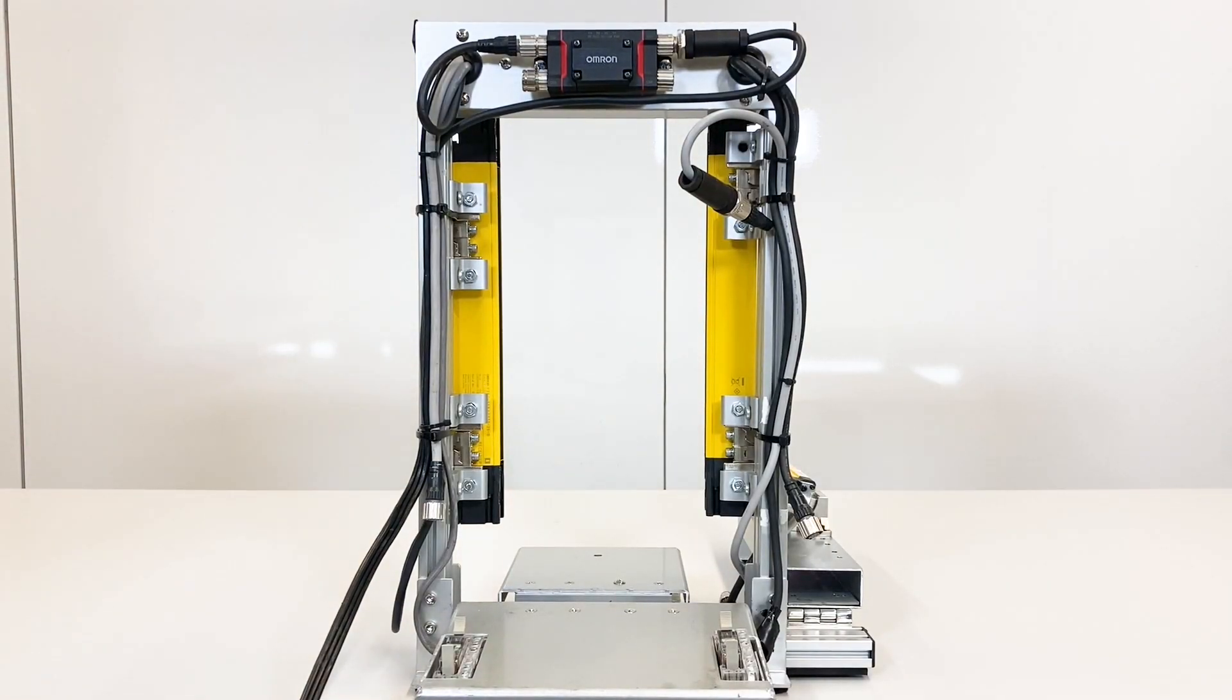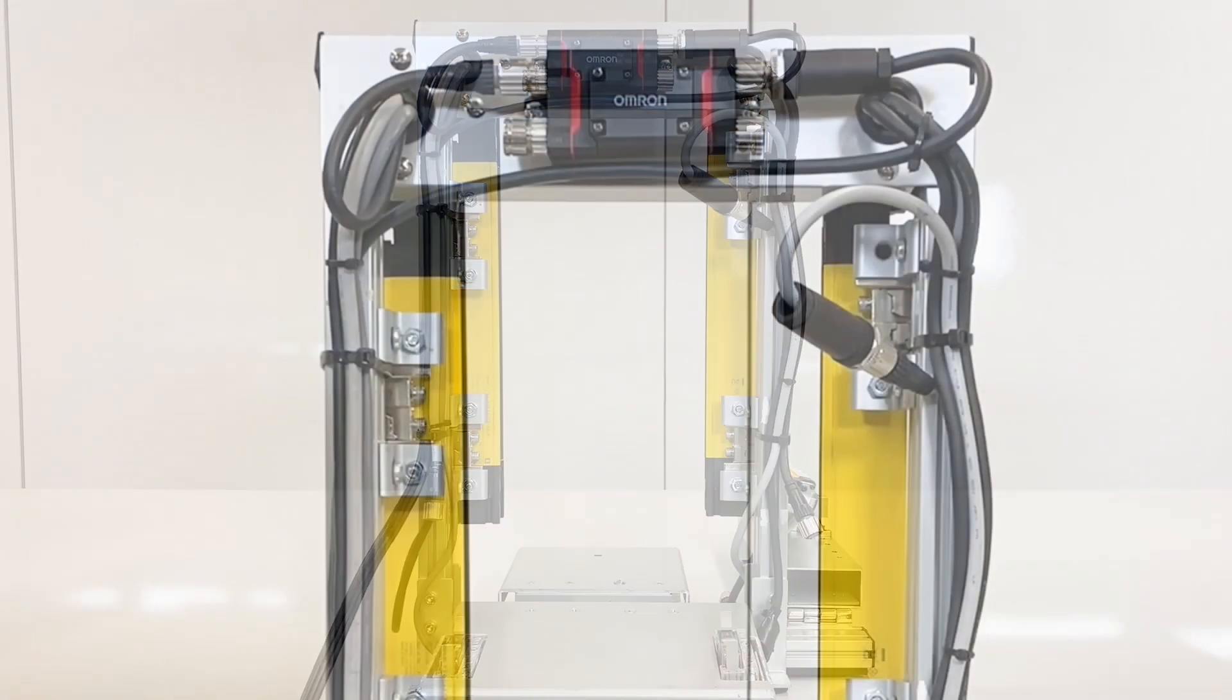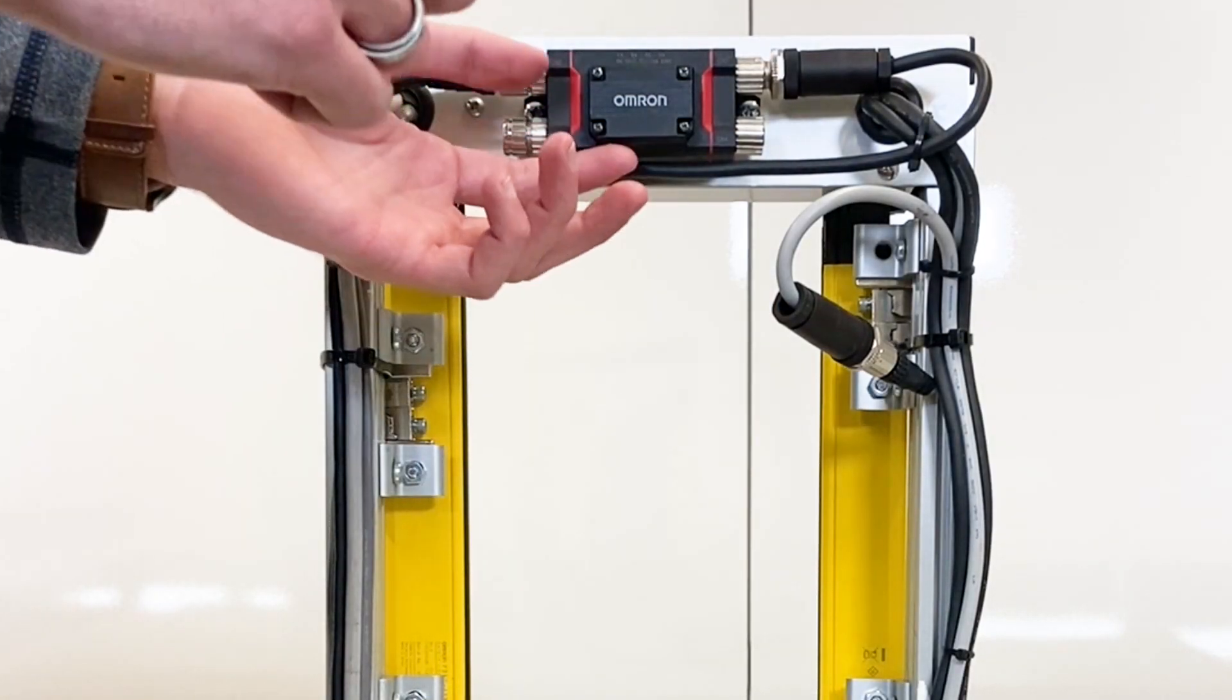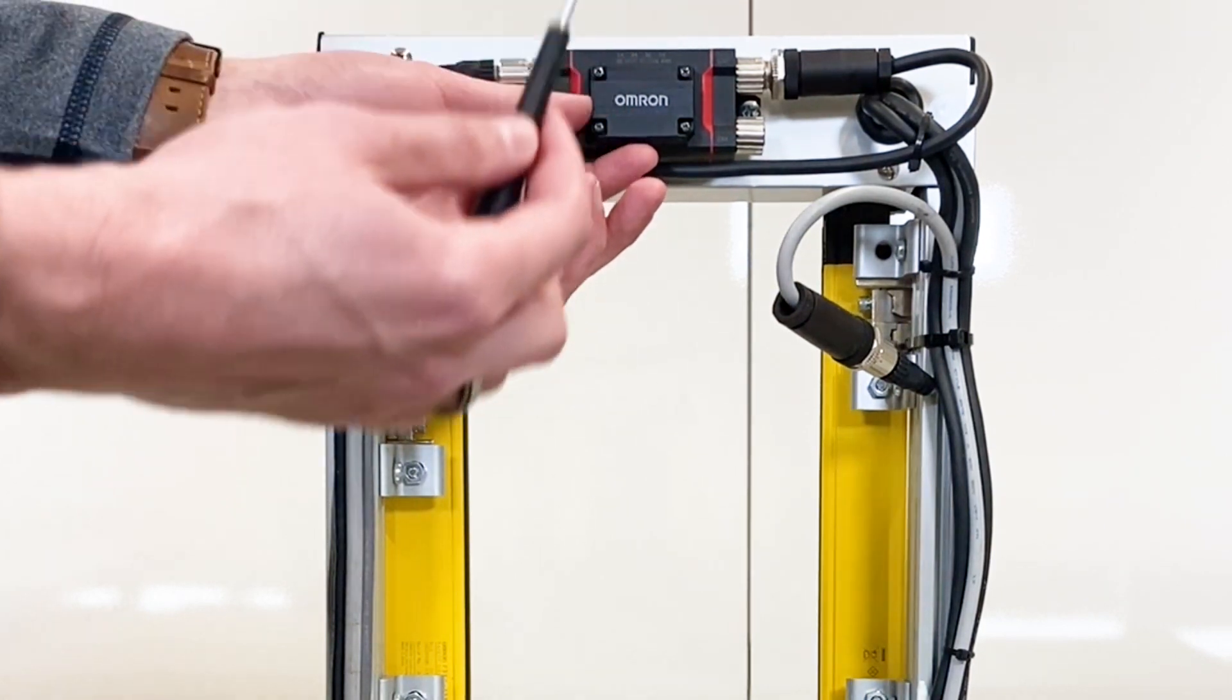Before we get started, you're going to want to make sure that your Intelligent Tab and safety light curtain is powered off. After doing so, you're going to want to remove the Intelligent Tab cover right here by using a Phillips screwdriver.